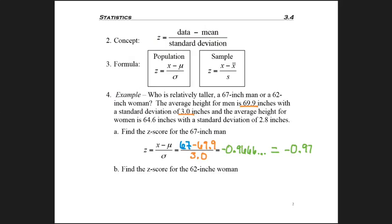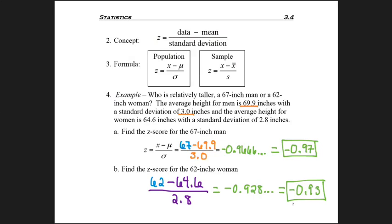To find the same thing for a woman, you could pause and try it and check your work. But I'll go ahead and keep going. Again, I need to take the height of the woman, which is 62 inches, subtract the mean height for women, divide by the standard deviation for women, and I get negative .92888, so negative .93.